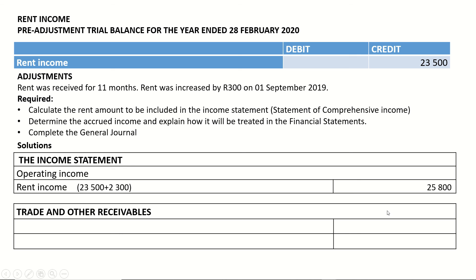The accrued income of R2,300 falls under trade and other receivables as a current asset on the balance sheet, recorded as accrued income with the amount of R2,300.